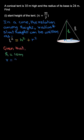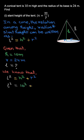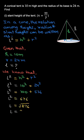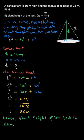...is h = 10 meters, r = 24 meters, l is not known. Let's use the formula. We know that l² = h² + r². Substituting the values, we'll get l² = 100 + 576, l² = 676. Hence l comes out to be 26 meters. Hence, slant height of the tent is 26 meters.